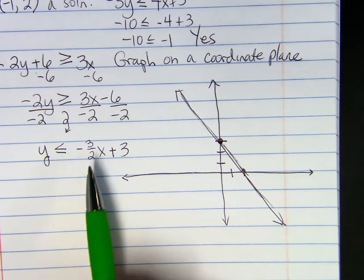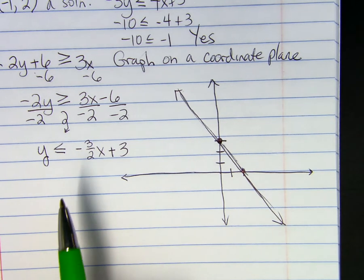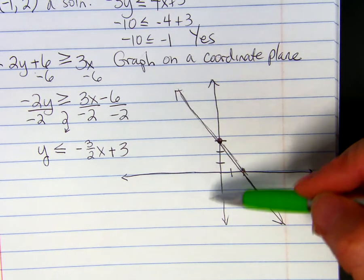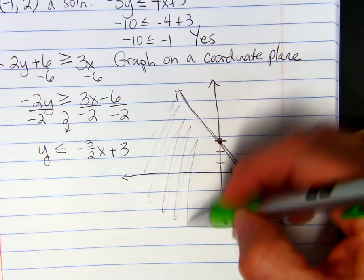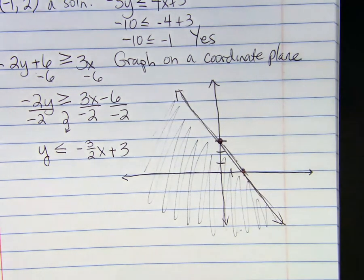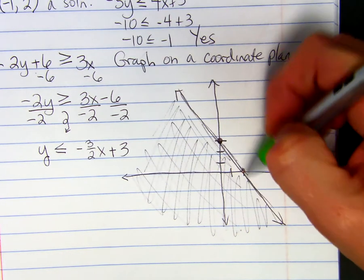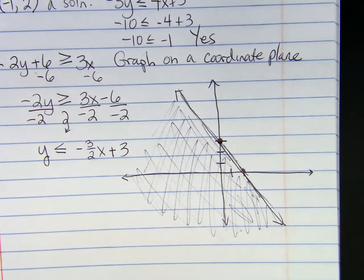And it is solid. Okay. This says that y is less than or equal to. What did we say about y and which direction it gets smaller? Down. Down. So we are going to shade below the line or by where the y is getting smaller.